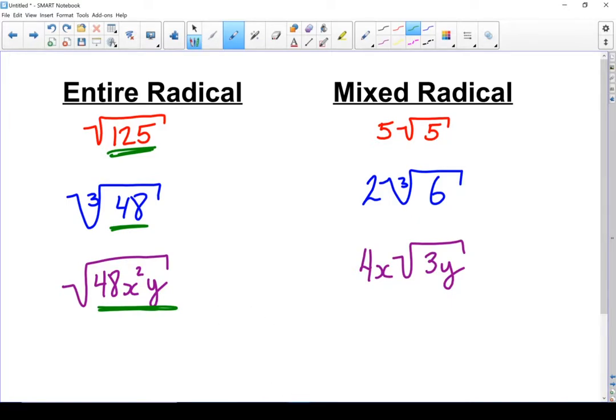Whereas we go over to a mixed radical, we can count this as simplified. We've taken what we can out of the radicand and put it in front as a coefficient. This is the primary difference. So any time you've got a coefficient in front, you've got a mixed radical. If the only coefficient you've got in front is a 1, you've got an entire radical.